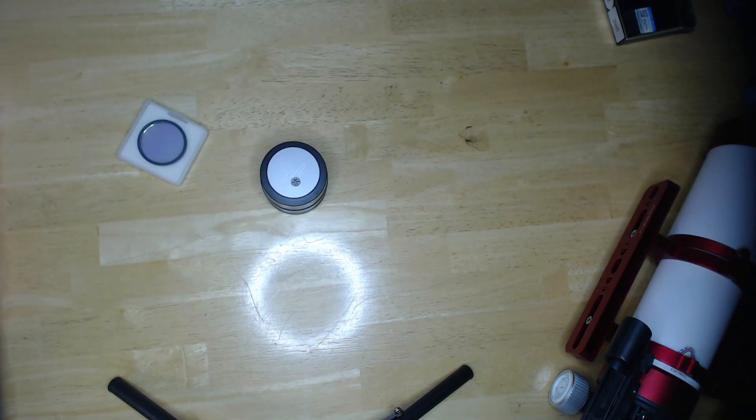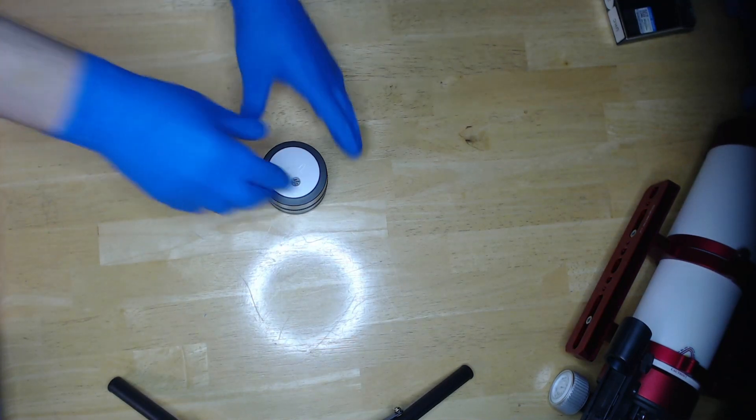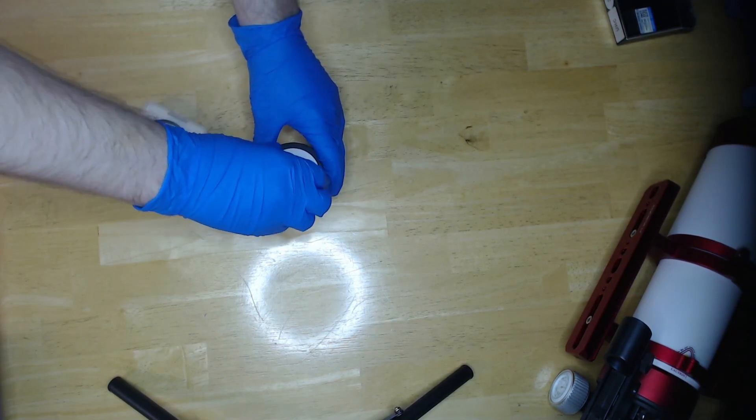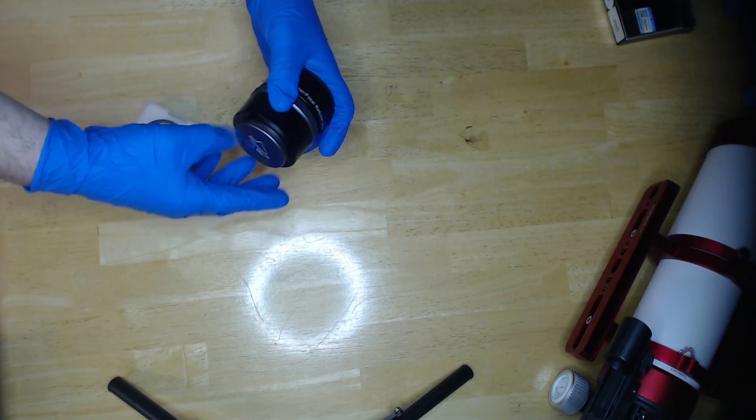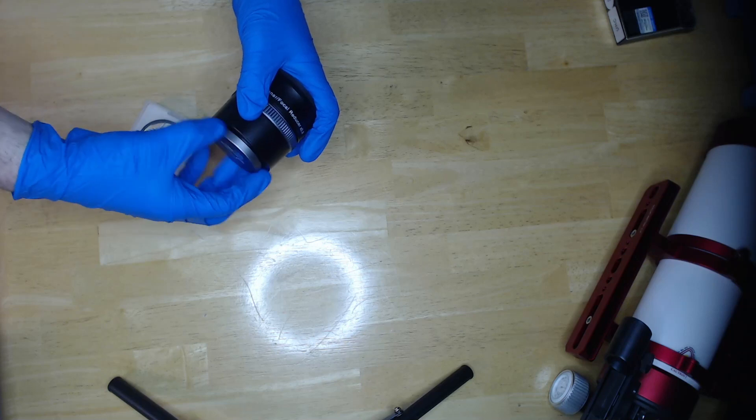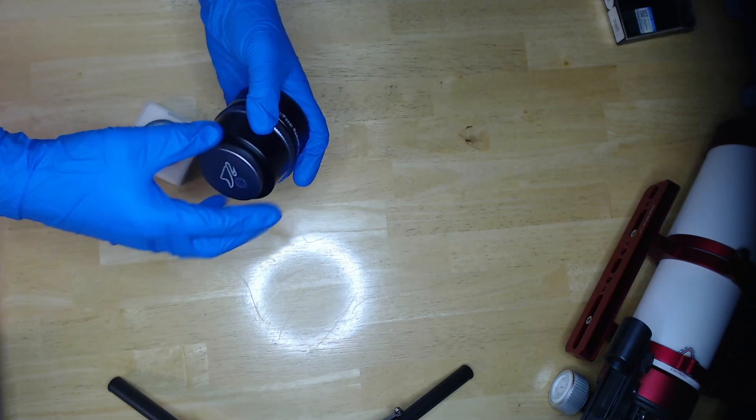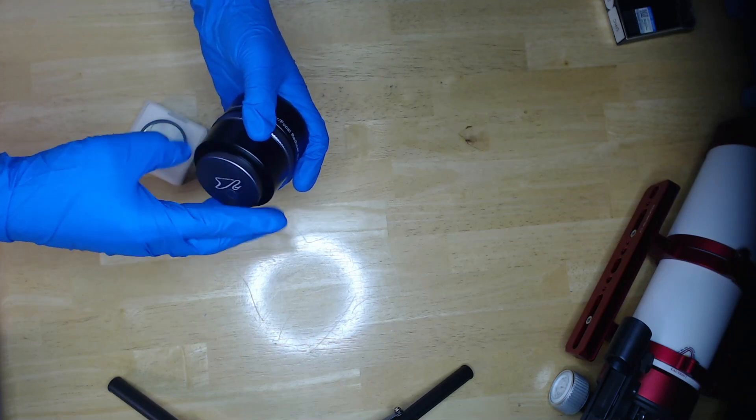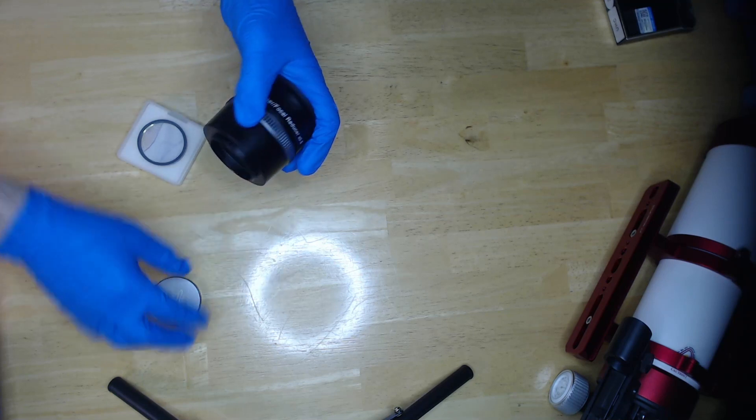Let me put on some gloves. You should always wear gloves when handling these components because you don't want smudge marks or fingerprints on any lens elements or the filter itself. Once you're wearing gloves, unscrew the dust cover on the back of your focal reducer.